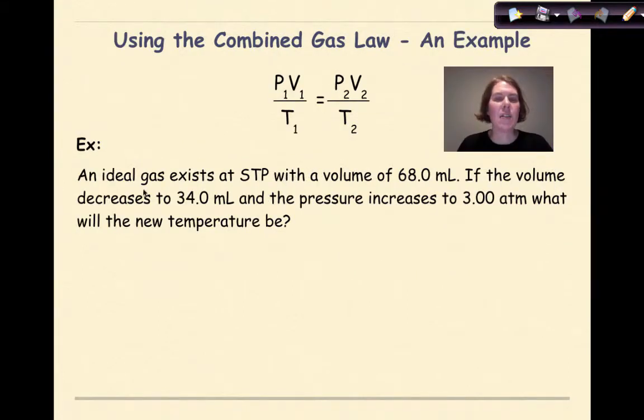Let's look at an example. An ideal gas exists at STP with a volume of 68 milliliters. If the volume decreases to 34 milliliters and the pressure increases to 3 atmospheres, what will the new temperature be? So the variable that we're looking for is a new temperature. For this particular example, because we have so many different things going on, I'm going to list out all my different variables.